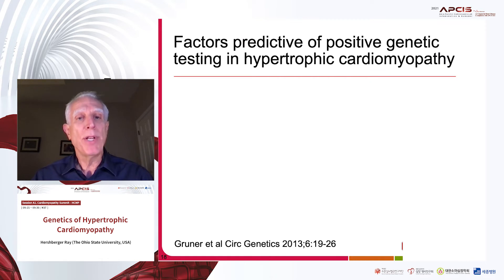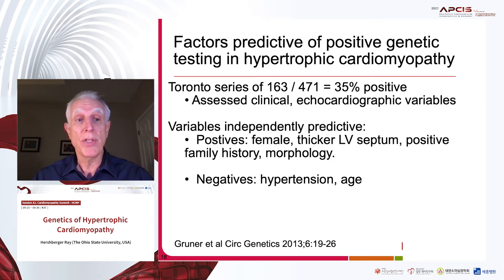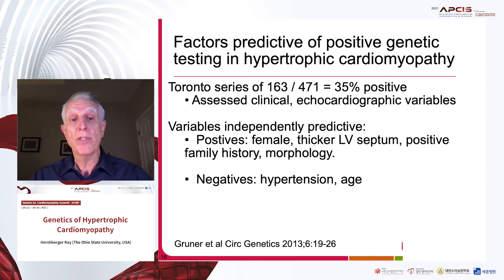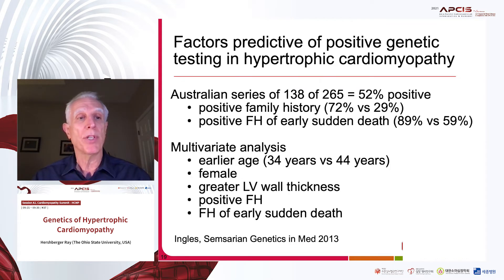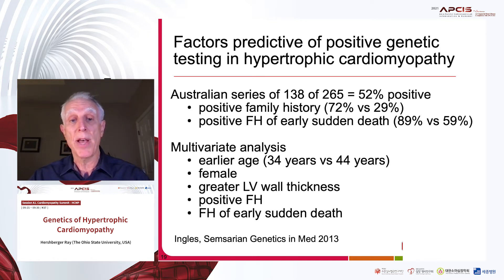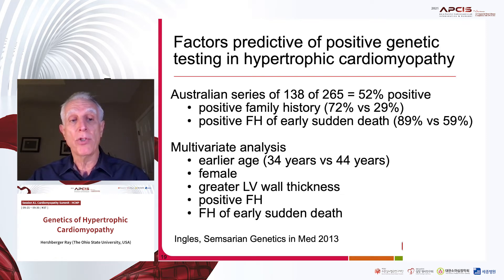The factors predicting positive testing in the Toronto series assessed clinical and echocardiographic variables, and found that females, thicker LV septum, positive family history, and morphology were positive predictors. If someone was hypertensive or older, they were less likely to have positive testing. The Australian series replicated that finding — positive family history, family history of early sudden cardiac death, earlier age, female sex, greater LV wall thickness, and family history of sudden early death.